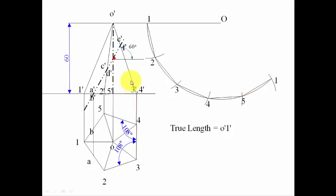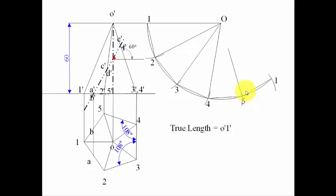We also need to draw the slant edges in the development. These slant edges will look something like this — join each base point to O. These are the slant edges in the development.